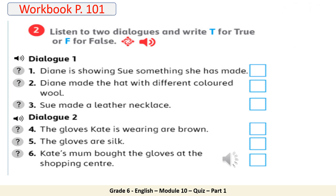Dialogue 1: Look at this, Sue. Do you like it? Well, I don't know what to say, Diane. Say something — it took me all weekend to make this hat. Really? It's really colorful. Did you make it with wool? Yes, in all the colors of the rainbow. What's this thing here? It's a necklace — I made that with leather and I put some wool on it too, in all the colors of the rainbow again. That way it matches the hat. Do you think mum will like them? They're for mum — how nice.